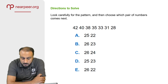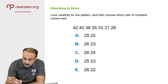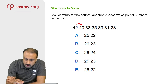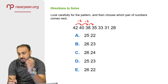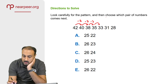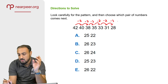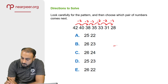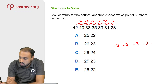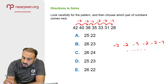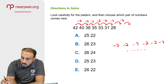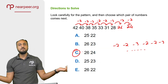The next question — the series is: 42, 40, 38, 35, 33, 31, 28. Looking at the pattern: 42 to 40 is minus 2, 40 to 38 is minus 2, 38 to 35 is minus 3, 35 to 33 is minus 2, 33 to 31 is minus 2, 31 to 28 is minus 3. So the pattern alternates: minus 2, minus 2, minus 3. Therefore 28 minus 2 is 26, and 26 minus 2 is 24. Answer: 26 and 24.